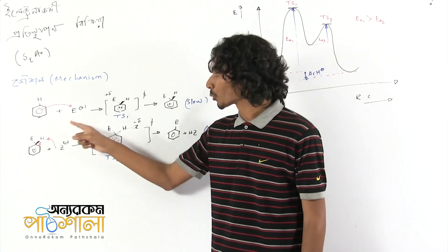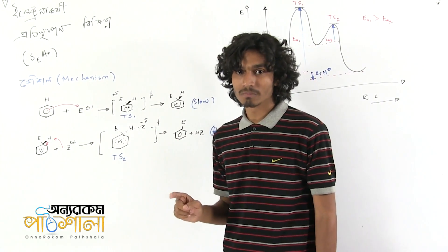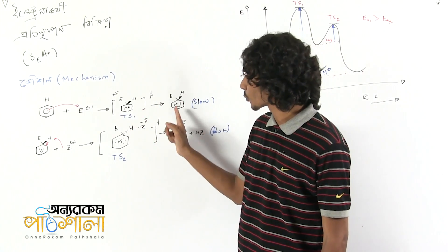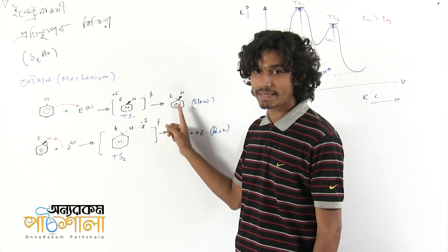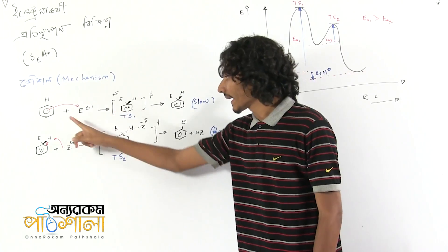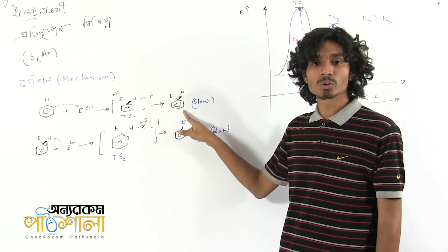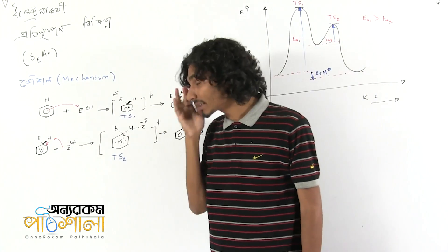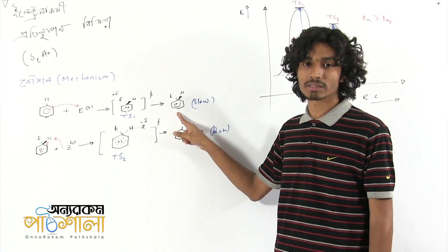What we have to do is first of all get the slow step. The first step is very slow. When we get the aromatic properties, we can lose aromaticity. The aromatic properties are partially lost with the electrophile.